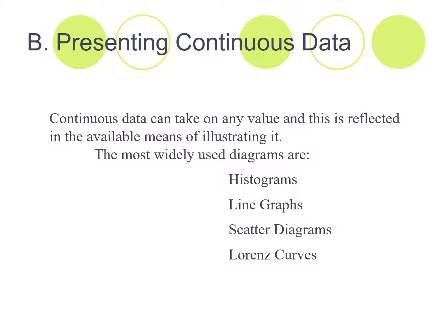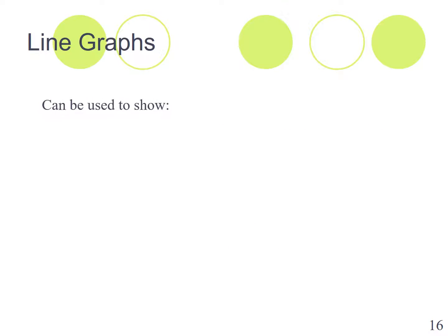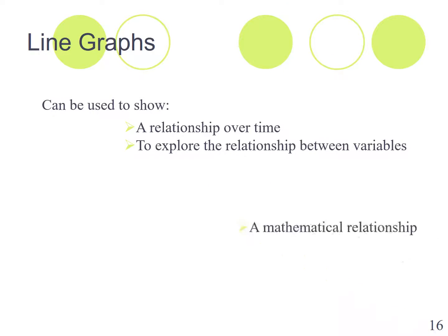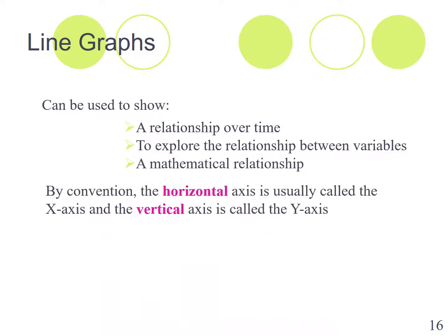Line graphs can be used to show a relationship over time, to explore the relationship between two different variables, or some sort of mathematical relationship. And you probably had X and Y when you're in school environment. By convention, the horizontal axis, that's the one across the bottom, is X and the vertical axis is Y.